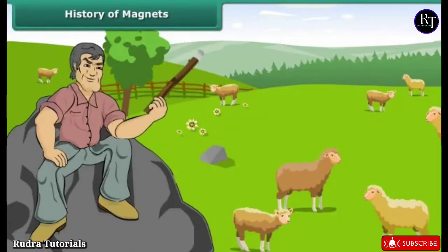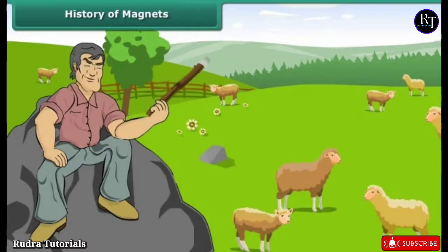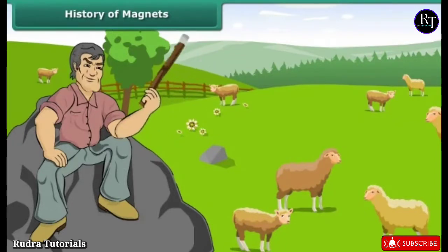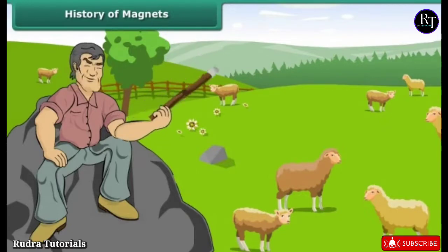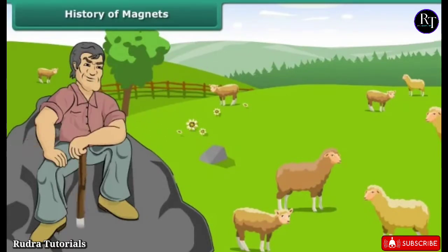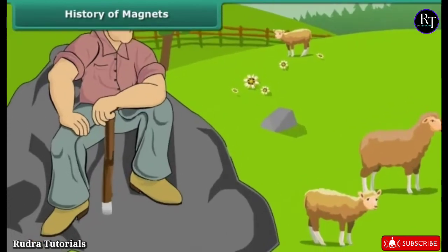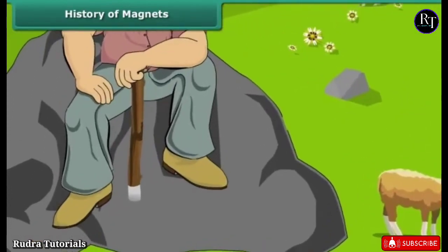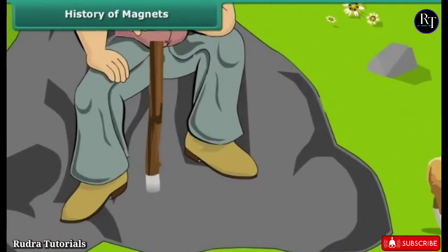There is a popular legend that leads us to the discovery of magnets, which involves an elderly Greek shepherd named Magnus. It says that Magnus was herding his sheep in an area of northern Greece called Magnesia about four thousand years ago. Suddenly, the metal tip of his stick became firmly stuck to a large black rock on which he was sitting.